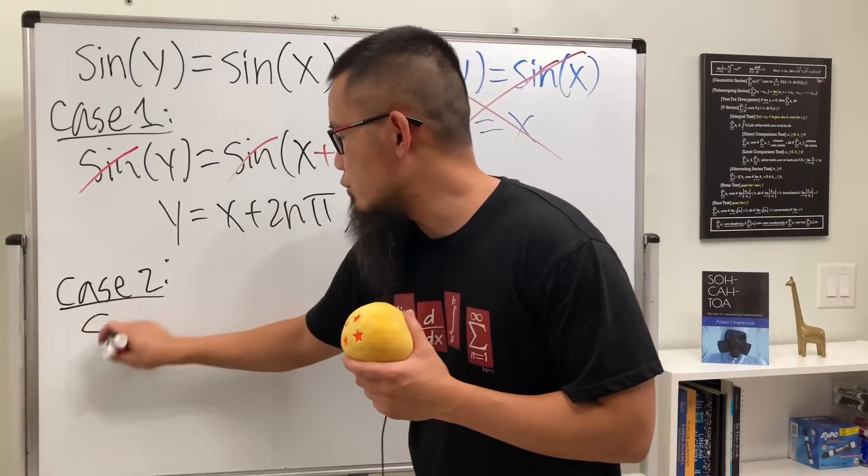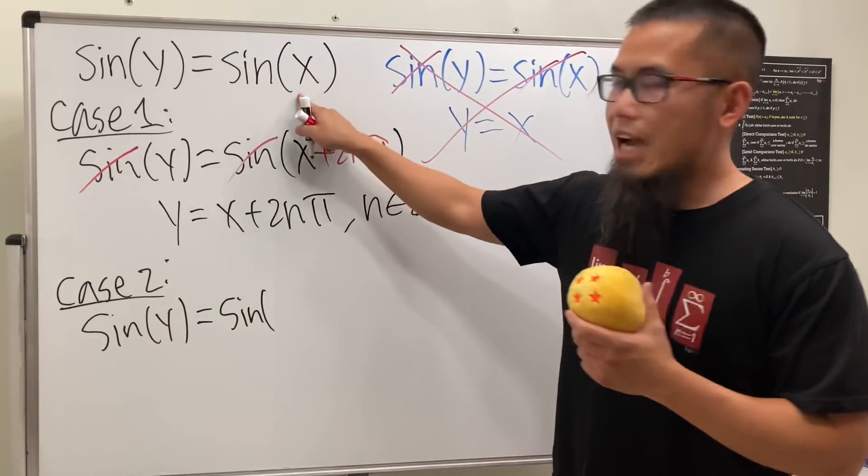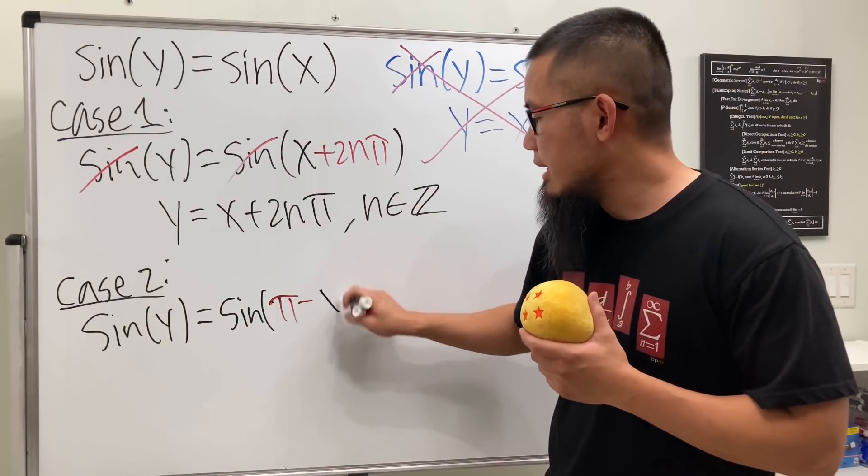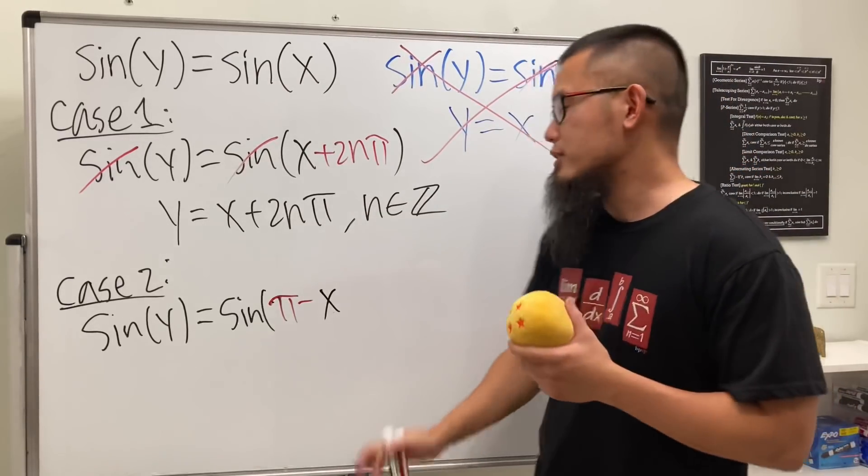Now let's look at the second case. Let's write down sin(y) again. When we have x inside, it's actually the same as - we can have π minus x. This and that is the same thing. Again, sine is a periodic function, so we also have to add 2mπ because I used n already.